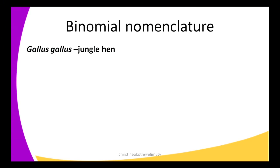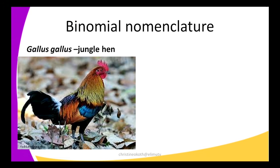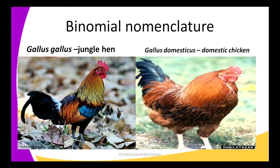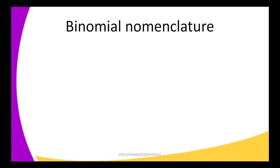The next examples: we have Gallus gallus, which is a jungle hen, and Gallus domesticus, which is a domestic chicken. All these are of the same genus — they are all chickens — but they have different species names. The jungle hen's species name is gallus, and the domestic chicken's species name is domesticus.